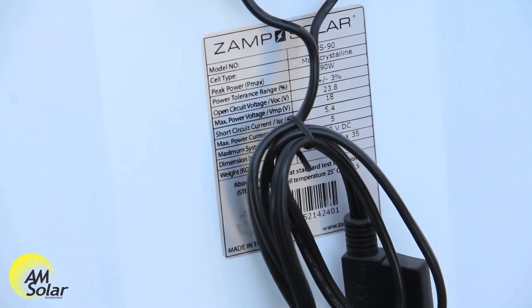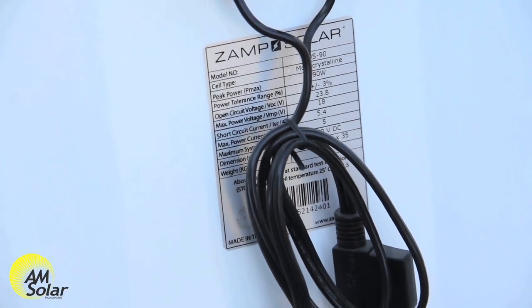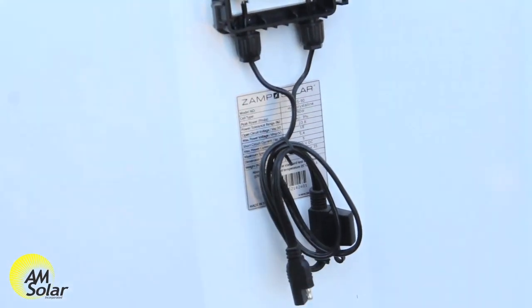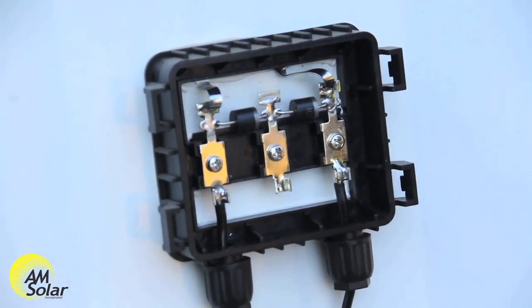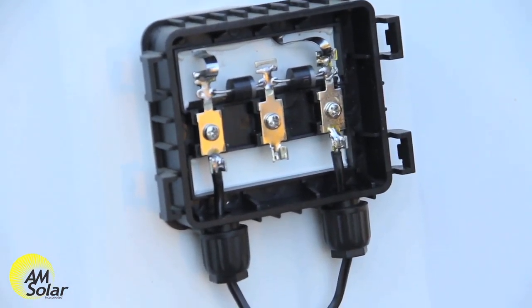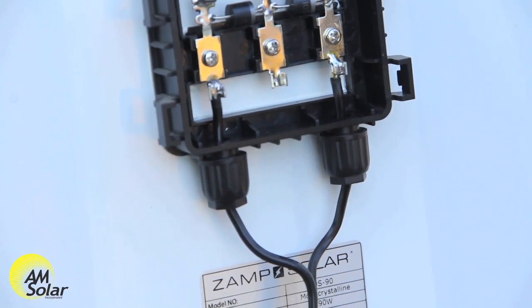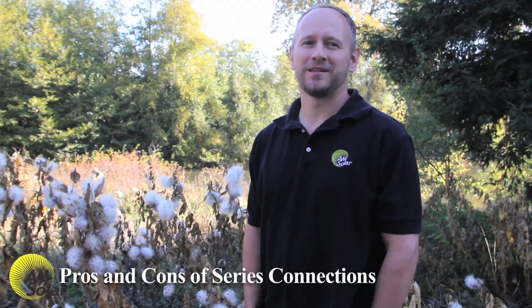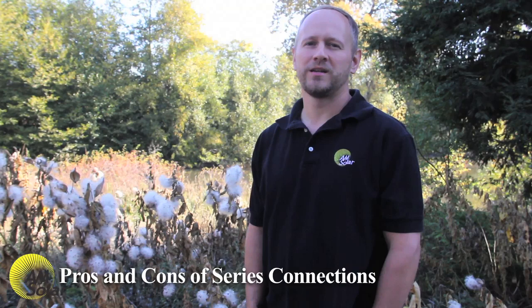Bypass diodes in modern solar panels are able to isolate the underperforming panels or panel sections and allow current to go around the underperforming section, but in doing so, the voltage is reduced proportional to the contribution of the bypass section. Series connections are great when cables are undersized and can run with slightly more efficiency on MPPT charge controllers, but they don't perform as well in partial shade conditions, especially if the panels don't have functioning bypass diodes. Series connections also result in higher voltage and may not be compatible with your charge controller and may introduce safety concerns due to the increased likelihood of arcing.